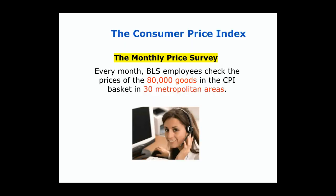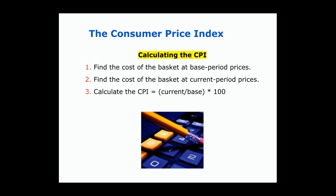When we look at the Consumer Price Index, we can look at the monthly price survey. Every month, the Bureau of Labor Statistics checks the prices of some 80,000 goods and services, and they do that in 30 metropolitan areas — not in rural America, but in the 30 major metropolitan areas. To calculate the CPI, we look at the cost of the basket in the base year, then the cost of the basket in the current period, and calculate the CPI by dividing the current by the base and multiplying by 100.